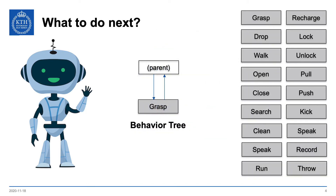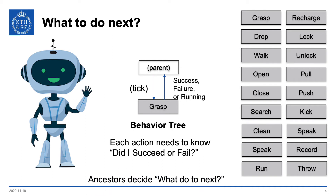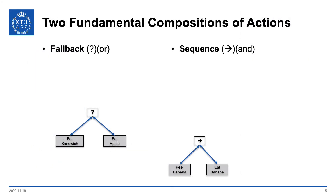In a behavior tree however, each action only needs to know: did I succeed, did I fail, or am I still trying? You have the parent of each action that sends down a tick requesting you to act, and then you return success, failure, or running. Then who decides what to do next? Well, it's the ancestors of the actions. That sounds a bit like magic, but it's not. There are two fundamental compositions of actions that help answer the question of what to do next.